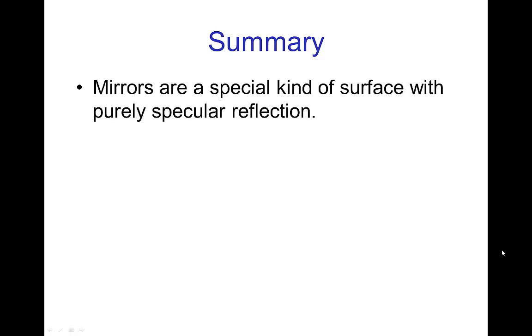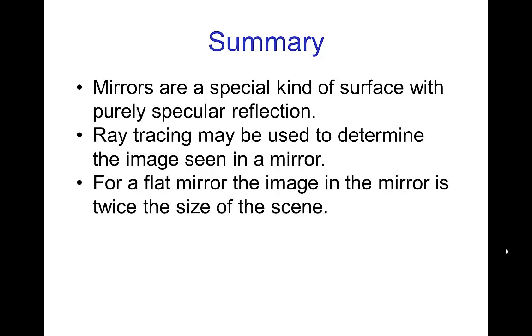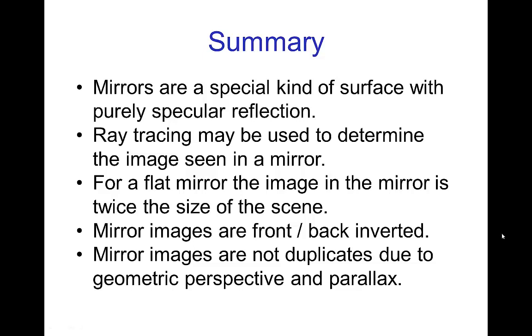In summary, mirrors are a special kind of surface with purely specular reflection. Ray tracing can be used to determine the image seen in a mirror and using ray tracing, we saw that a flat mirror has an image in the mirror that is twice the size of the scene, or in other words you only need half the size of a mirror to have appear the same scene. Mirror images are front back inverted. We think of them as left right inverted, but it's actually front back inverted. Mirror images are not duplicates because we have to account for geometric perspective and parallax. Of course, in computer graphics that is often done automatically, but when we are imagining a scene and formulating a scene, we have to keep in mind that we have these effects in mirror images.